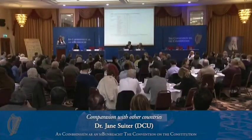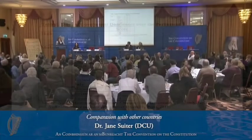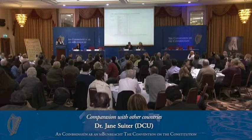There is a table here from Niamh Hardiman which shows the dominance of government over Parliament. You can see ourselves and the UK — the UK, with the recent reforms that Meg has been involved with, will likely be dropping down from there if this study were redone. But it's ourselves and the Greeks which have the most dominant executives. I think that tells its own story about how much we really want a very dominant executive.